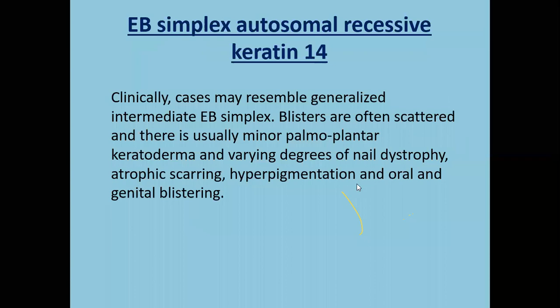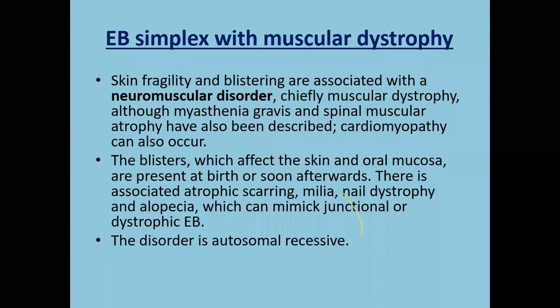EB simplex ogna is typically characterized by bruising tendency, hemorrhagic bullae, and onychogryphosis of the big toe. EB simplex migratory circinate is characterized by migratory circinate erythema and post-inflammatory hyperpigmentation; blistering was present at birth and generalized in distribution. EB simplex autosomal recessive keratin 14 shows minor palmoplantar keratoderma, nail dystrophy, atrophic scarring, hyperpigmentation, and oral or genital blistering with generalized EB. EB simplex with muscular dystrophy is a generalized EB with neuromuscular disorders, including muscular dystrophy, myasthenia gravis, and spinal muscular atrophy; cardiomyopathy may also occur.